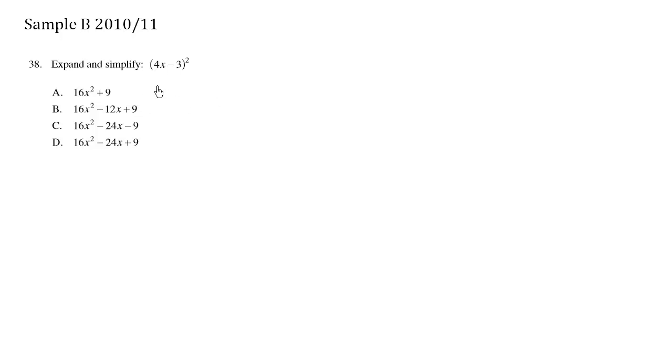Expand and simplify. This here is 4x minus 3 squared, so we can rewrite this as 4x minus 3 times 4x minus 3.